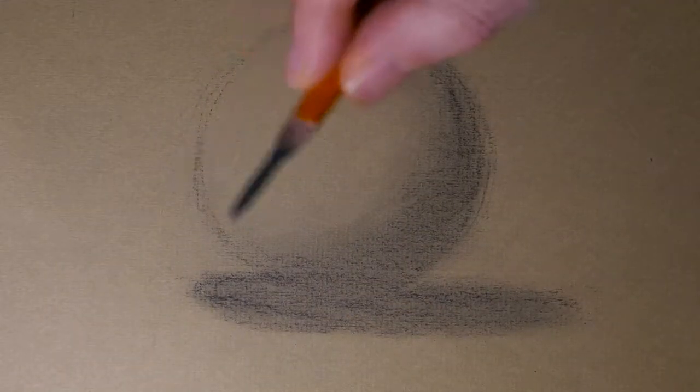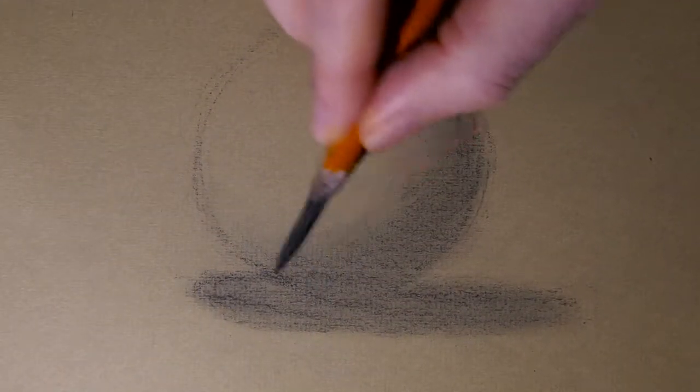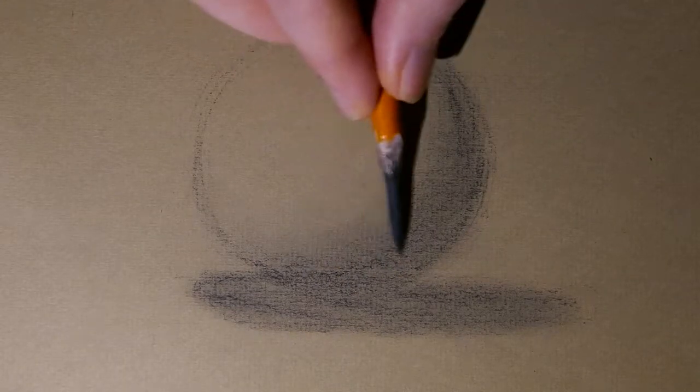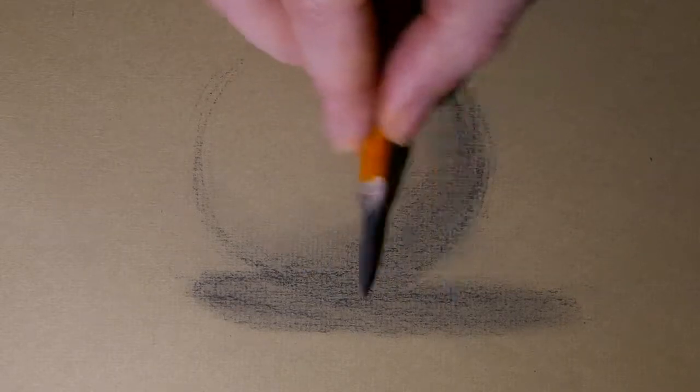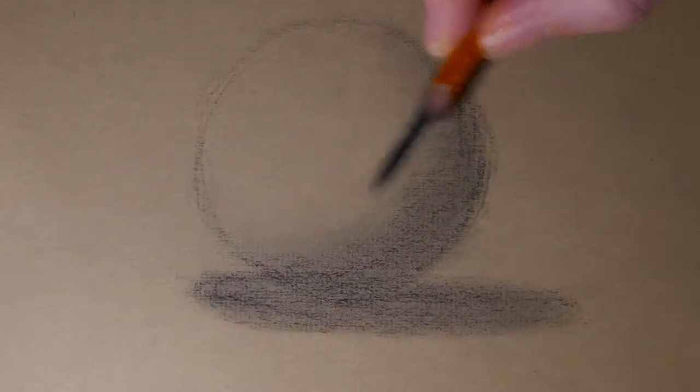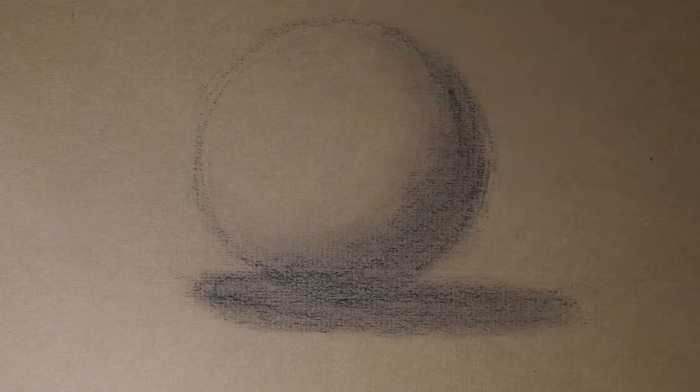Now I'm going to come back with my darks again and re-establish the shadow shape. At this point you're still working with really a two value statement: light, dark, light, dark. Not looking at a lot of differentiation within it.